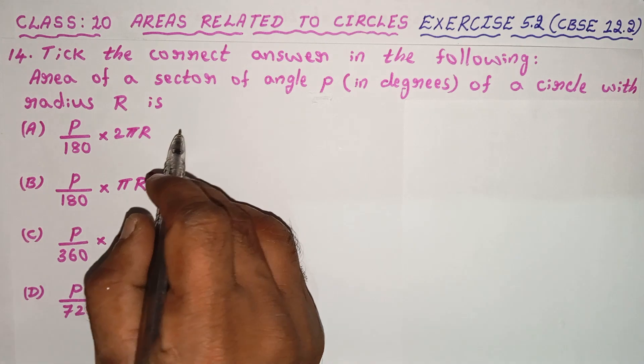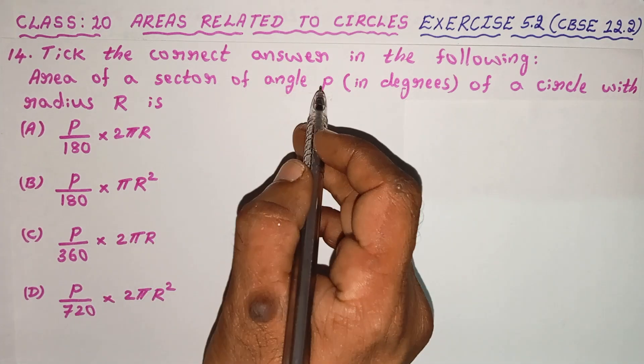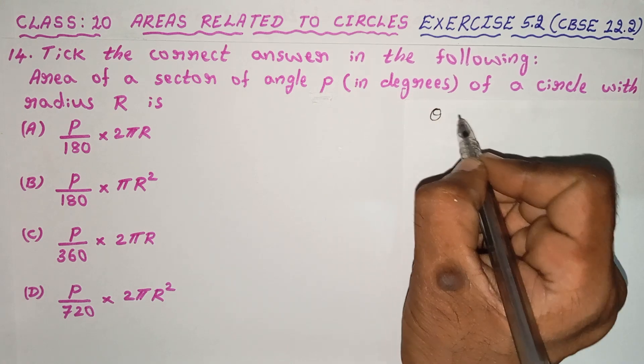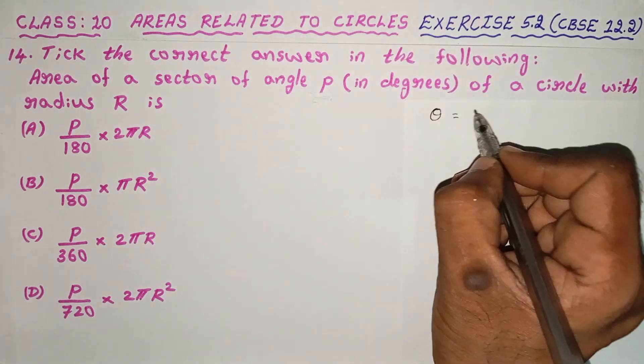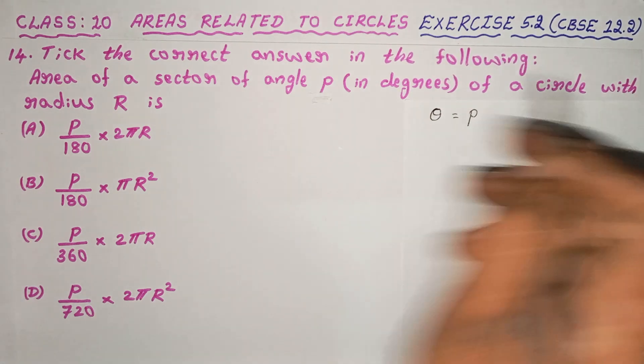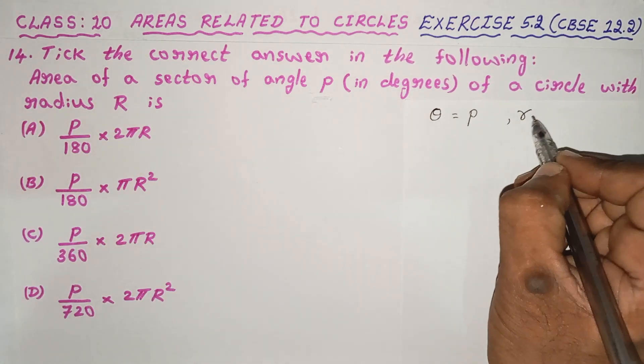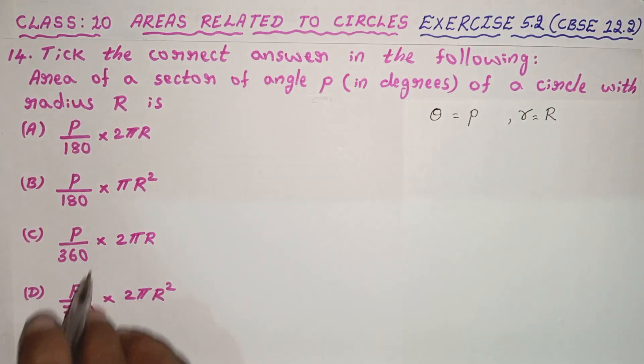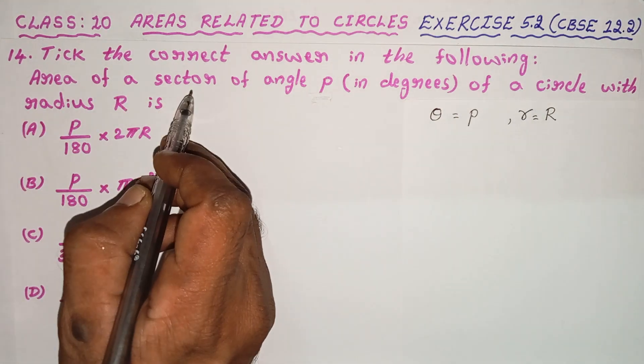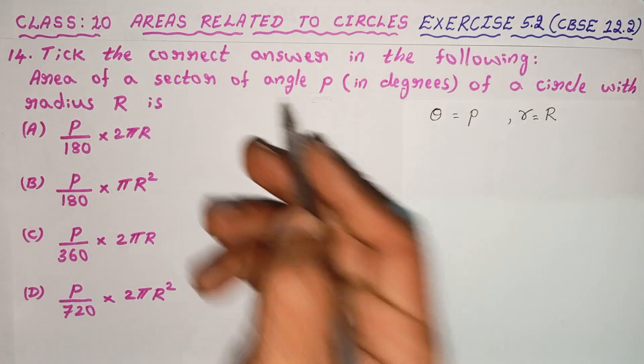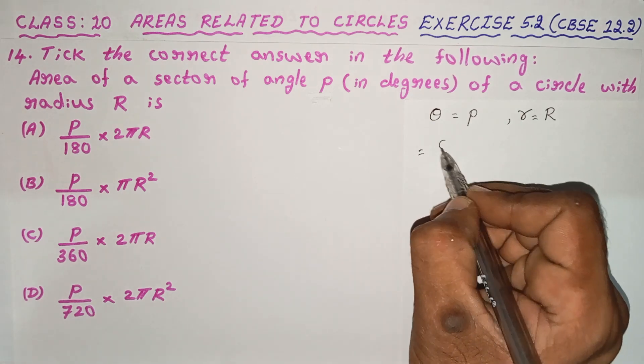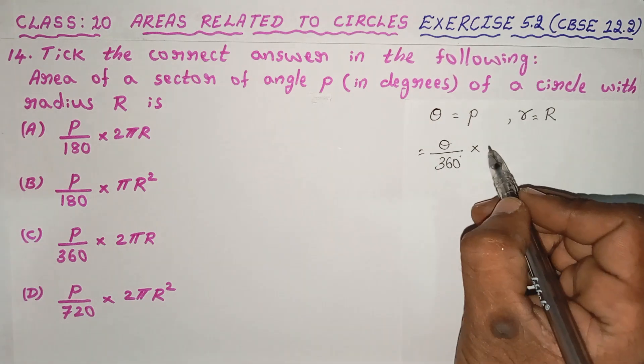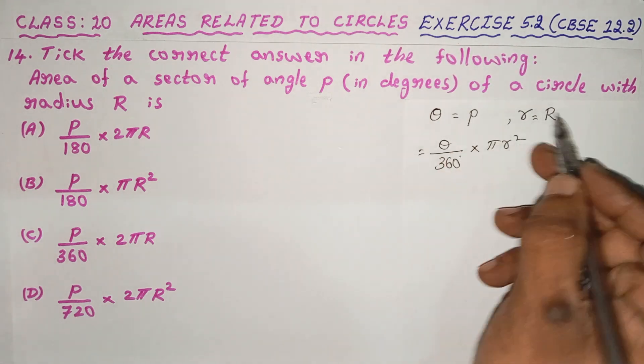The question asks what is the area of a sector of angle P. The angle of sector theta is P. Circle with radius R is given. The area of a sector is theta divided by 360 degrees into πR².